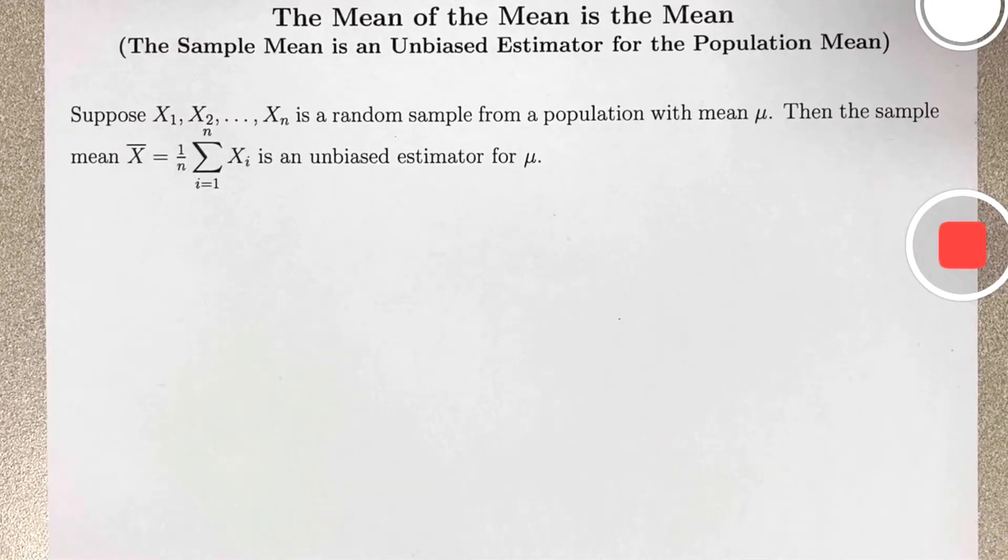Let x1 through xn be a random sample from a population with mean mu. Then the sample mean x-bar, which equals 1 over n times the summation i goes from 1 to n of xi, is an unbiased estimator for mu.